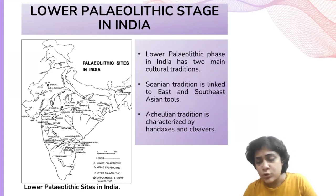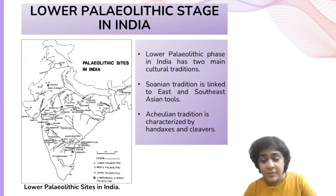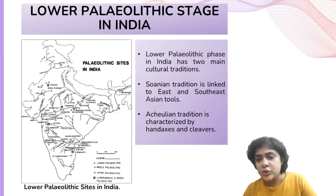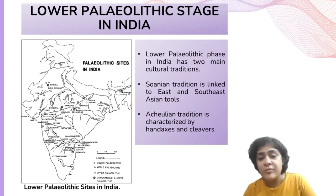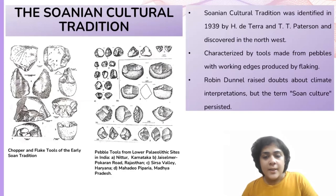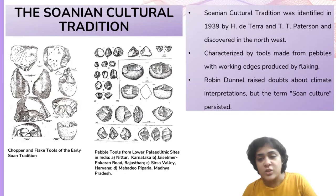The term 'Old World' is used in western terminology to collectively refer to Africa, Europe, and Asia, which constitute the eastern hemisphere. It denotes the part of the world that was known to its inhabitants before any contact with the Americas and Oceania, often referred to as the 'New World' in the western hemisphere.